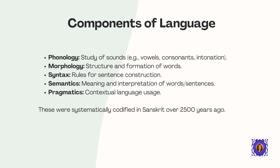In any language study, we recognize several fundamental components. Phonology deals with sounds, vowels, consonants, and intonation patterns. Morphology examines how words are formed and structured. Syntax addresses the rules for constructing proper sentences. Semantics explores how meaning is derived from words and sentences. Finally, pragmatics looks at how context affects language usage. What's remarkable is that these components were systematically codified in Sanskrit over two and a half millennia ago, long before modern linguistics emerged as a discipline. This early systematic approach shows the scientific rigor applied to language studies in ancient India.